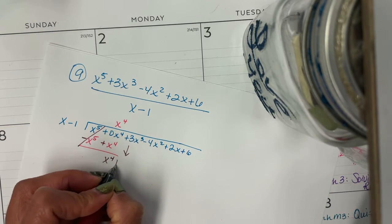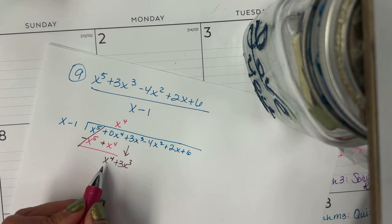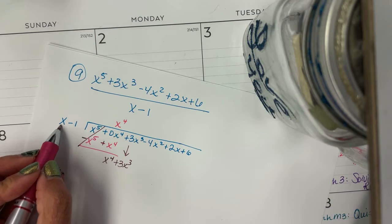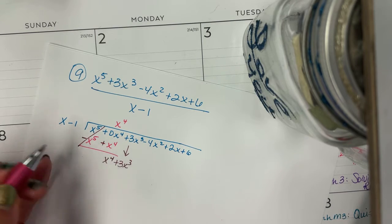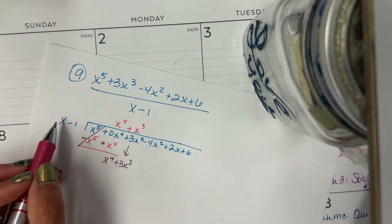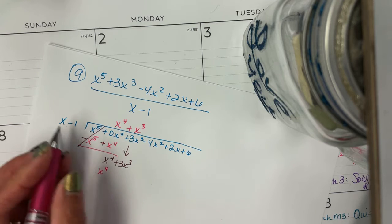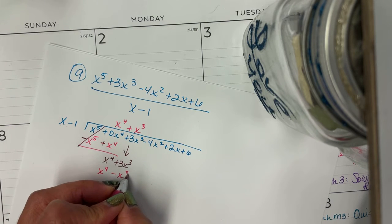And then we bring down the next term and do it all over again. Now this time I need to get an x to the fourth. So what do I multiply by x to get x to the fourth? Well, I need x to the third. And then we have to distribute it. x to the third times x is x to the fourth. x to the third times negative one is negative x to the third.